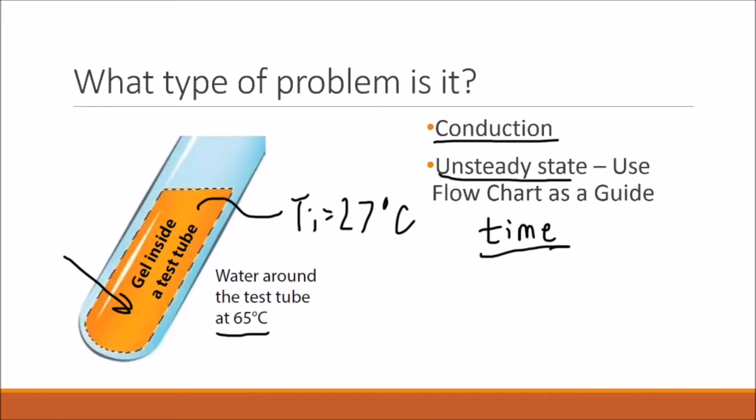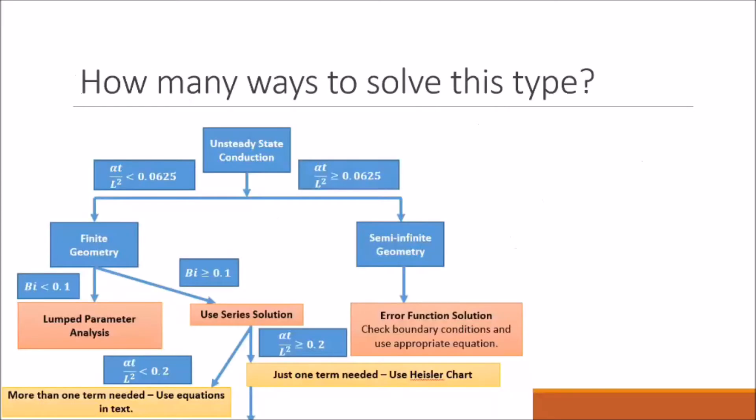Using our unsteady state flow chart, we can determine how many different ways there are of solving this problem. Our first step is to usually calculate alpha T over L squared, or alpha T over R squared, to determine whether we should be using a finite geometry or a semi-infinite geometry. However, in this problem we don't know what T is, so we can't find this value.